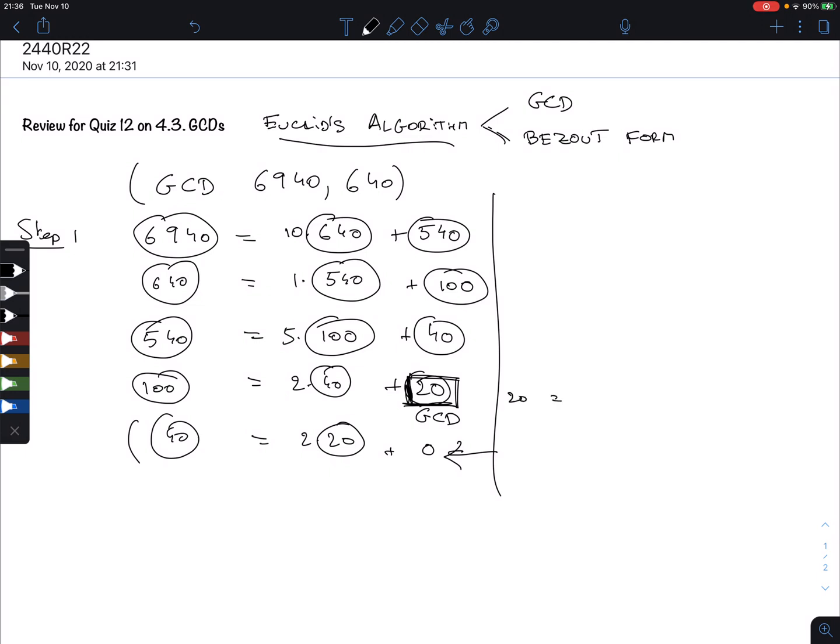We start in the back here. The GCD is 100 minus 2 times 40. I bring the 40 always to the other side. In the backwards, there's two steps: you solve for these remainders by bringing the other part over, and then you simplify. This is equal to 100 minus 2 times what is 40? That is 540 minus 5 times 100.